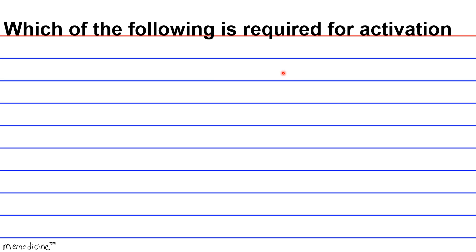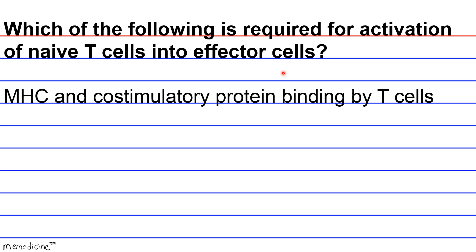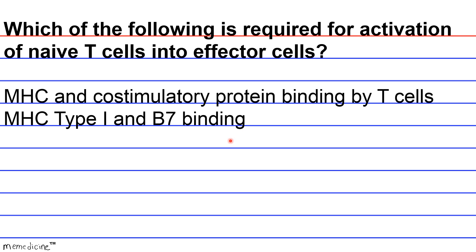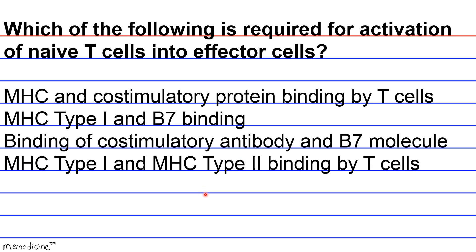Question: Which of the following is required for activation of naive T-cells into effector cells? A) MHC and co-stimulatory protein binding by T-cells; B) MHC type 1 and B7 binding; C) binding of co-stimulatory antibody and B7 molecule; or D) MHC type 1 and MHC type 2 binding by T-cells?